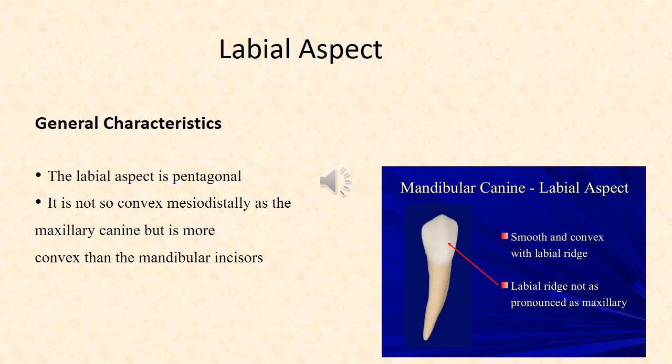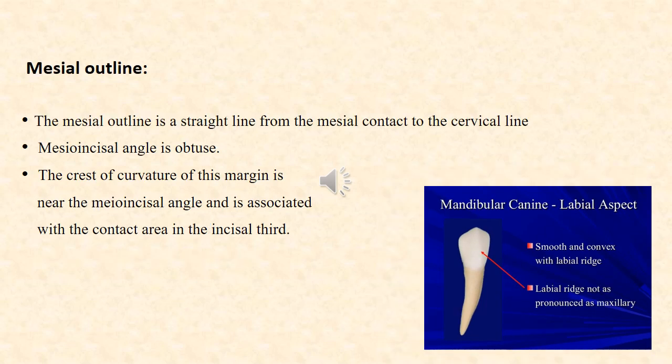It is not so convex mesiodistally as the maxillary canine but is more convex than the mandibular incisors. The mesial outline of the labial aspect is a straight line from the mesial contact to the cervical line. The mesioincisal angle is obtuse, and the crest of curvature of this margin is near the mesioincisal angle and is associated with the contact area in the incisal third.